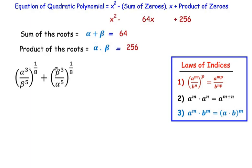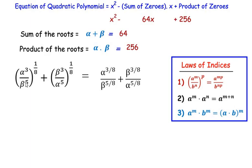Applying this law, we multiply the powers. For the first term, the numerator becomes α^(3 × 1/8) = α^(3/8), and the denominator becomes β^(5 × 1/8) = β^(5/8). The same applies to the second term as well.